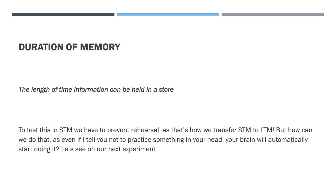You need a scrap piece of paper - I'll do the timings for you. We're going to do three conditions; each condition is pretty much exactly the same but a different length of time. What you're going to do is: I'm going to give you a trigram - three consonant letters put together that don't make sense - then I'm going to ask you to count backwards from a certain number in threes to stop you rehearsing.